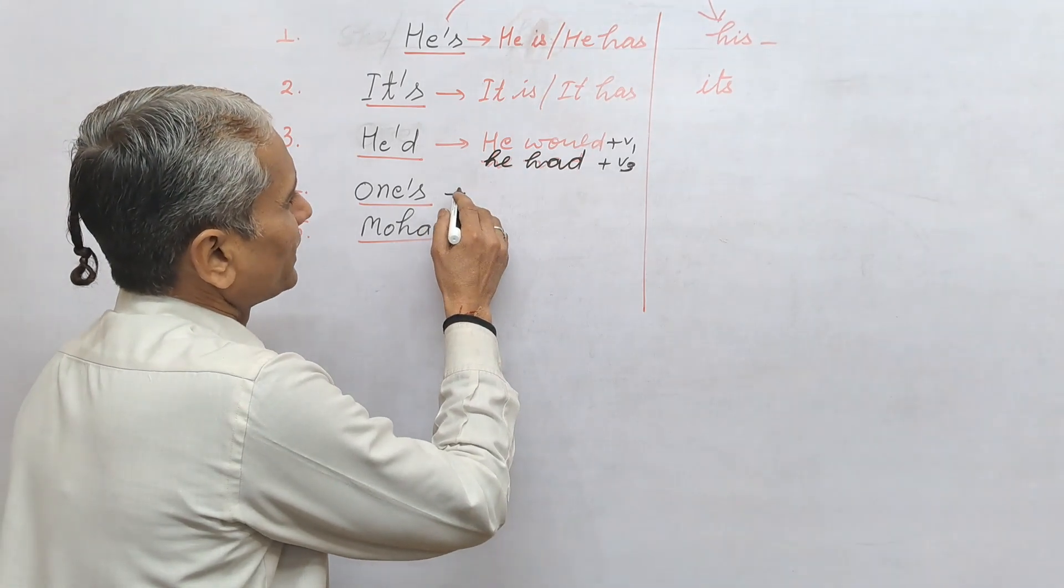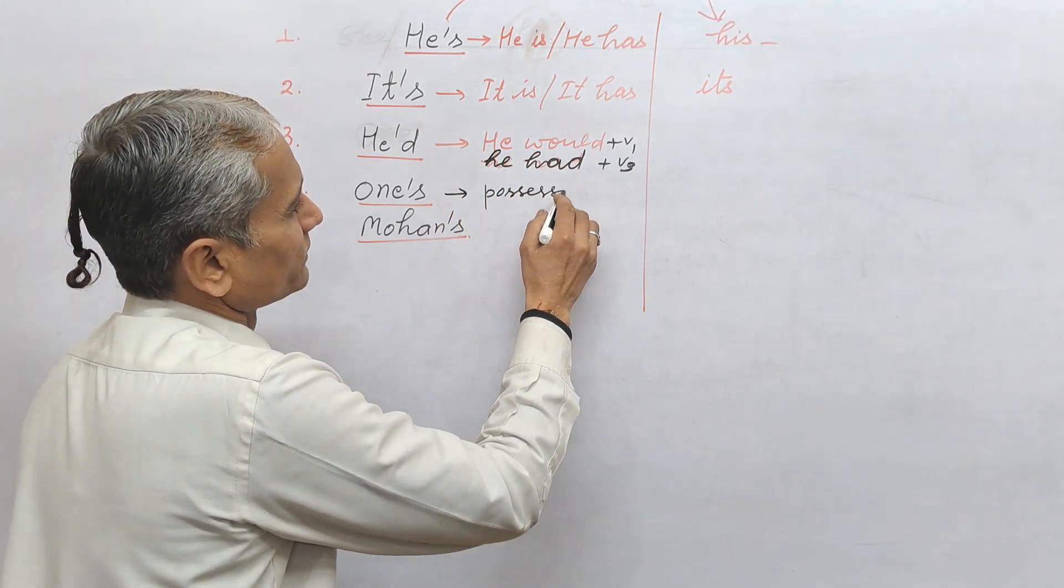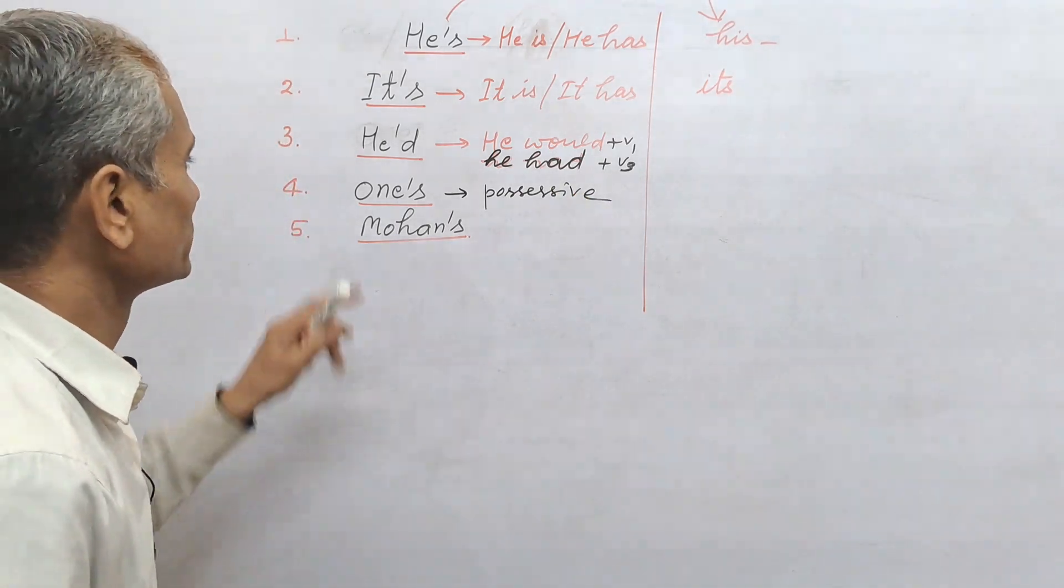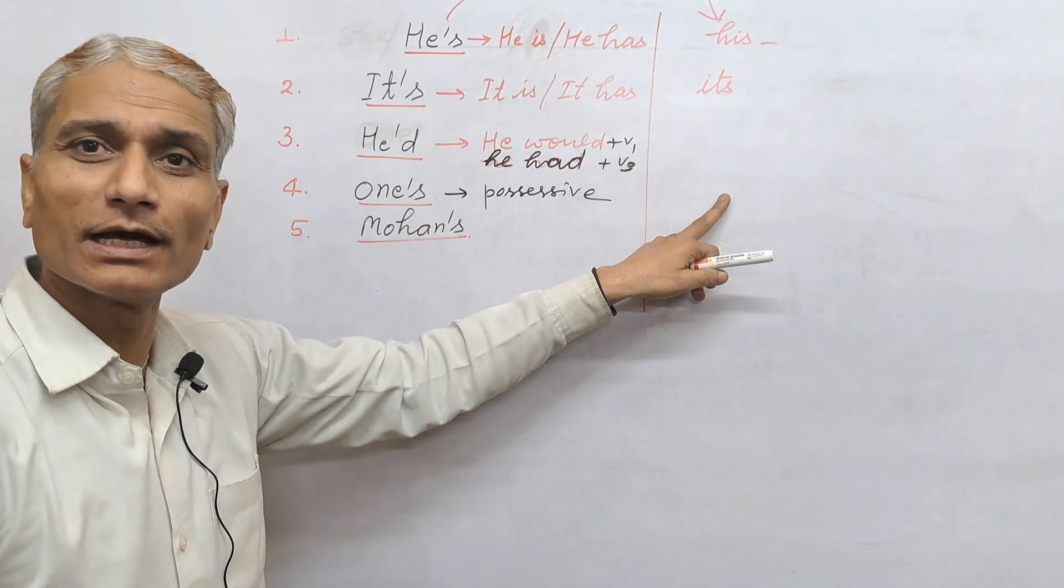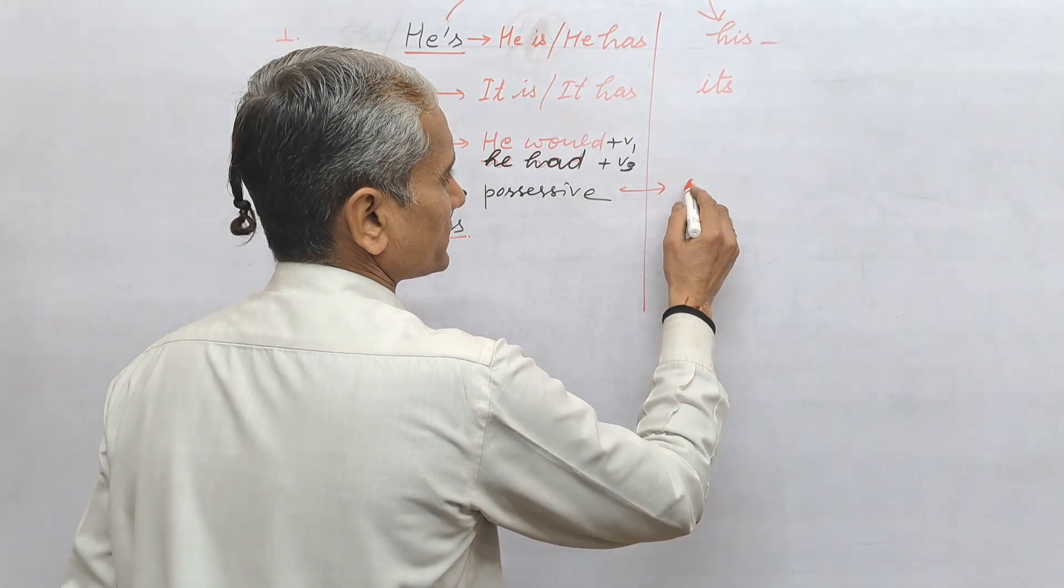One's. There, one's means it's possessive. It's a possessive because there is no standard form for one's possessive. Clear? So it is definitely a possessive. No problem. It's possessive.